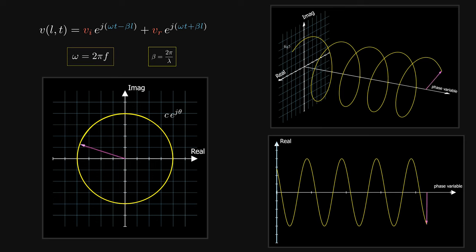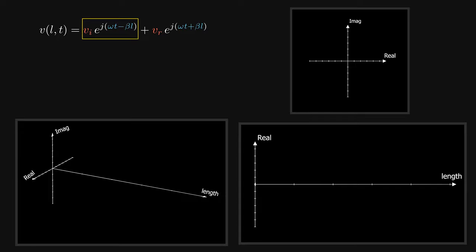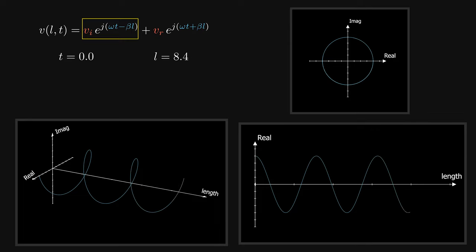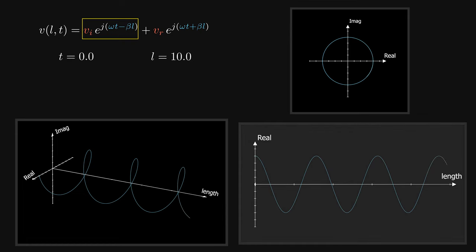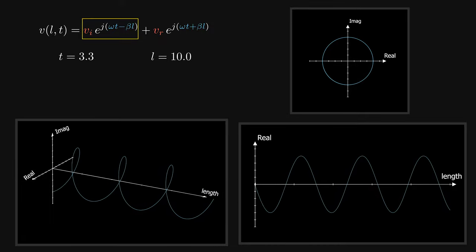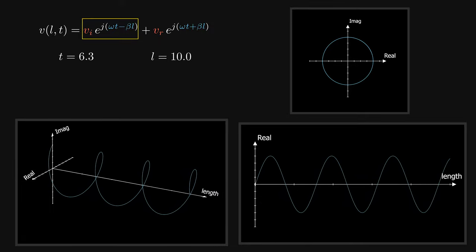Omega and beta are two constants representing the angular frequency and the phase constant respectively. For the forward wave, at each instant of time — for instance at t equals 0 — the phase angle changes as we sweep the length, hence it rotates as we move along the line. Large values of beta speed up the rotation. We are interested in the real part, so the forward voltage wave is distributed sinusoidally along the line. As we sweep the time, the phase angle changes also, and it feels like the voltage wave is moving through the line as time goes on.